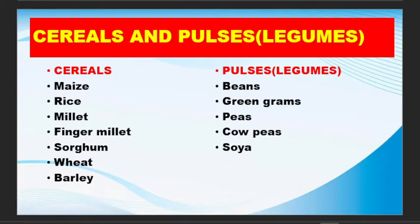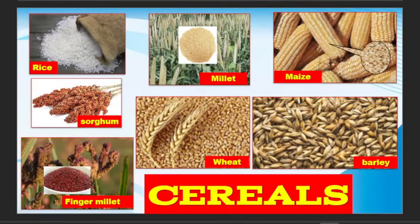Examples of the cereals and pulses. For cereals, we have rice, millet, maize, sorghum, wheat, barley, and finger millet.